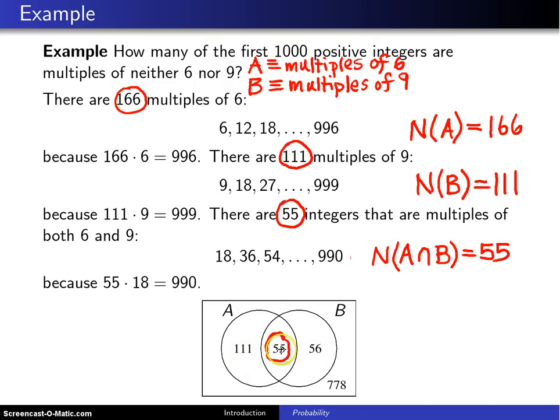And when you add these three numbers up and subtract them from 1,000, you finally get the answer to the question, which is there are 778 integers that are neither multiples of 6 nor 9.